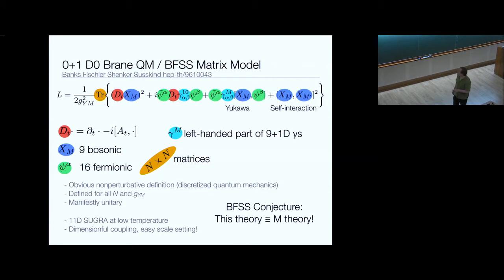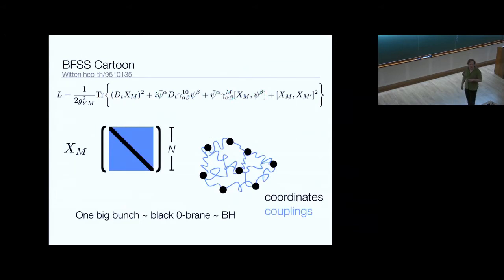As we heard, there was this conjecture that this theory is equal to M theory. Here's my little cartoon of how I like to think about this theory. If you think of some large number of D0-branes, represented here by my little black dots, then the coordinates live on the diagonal of these bosonic matrices. The off-diagonal elements represent the strings that couple these D0-branes together.